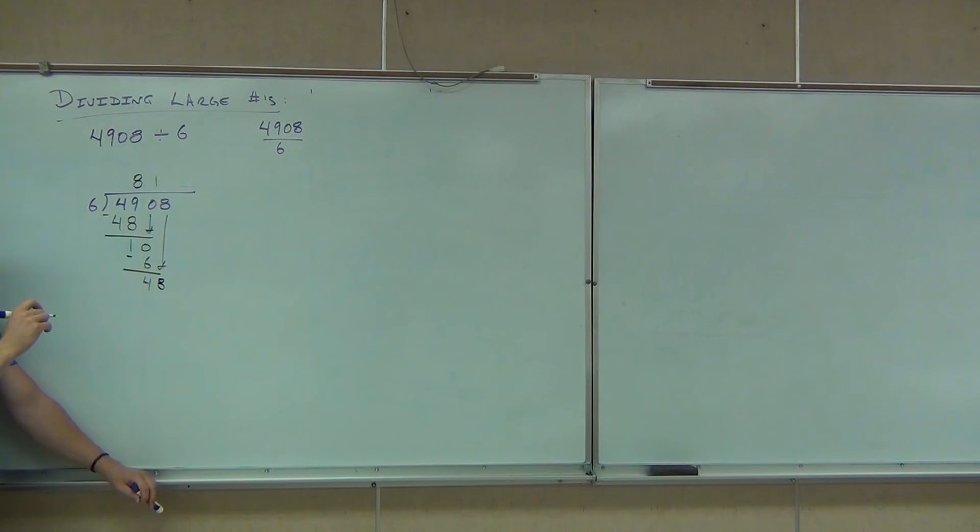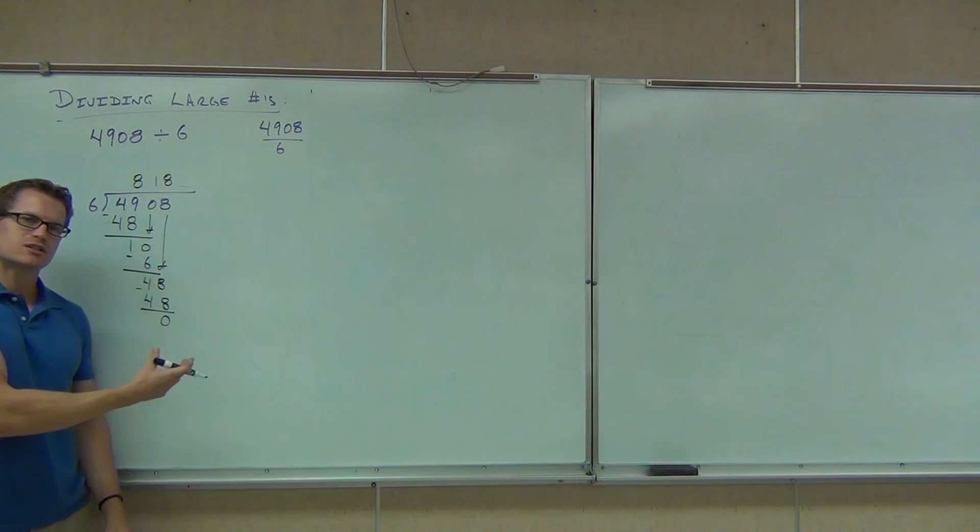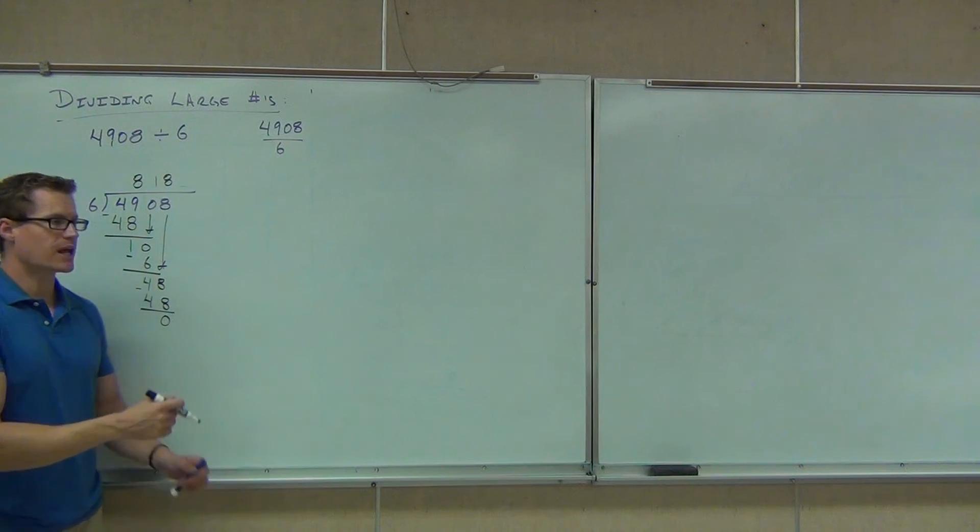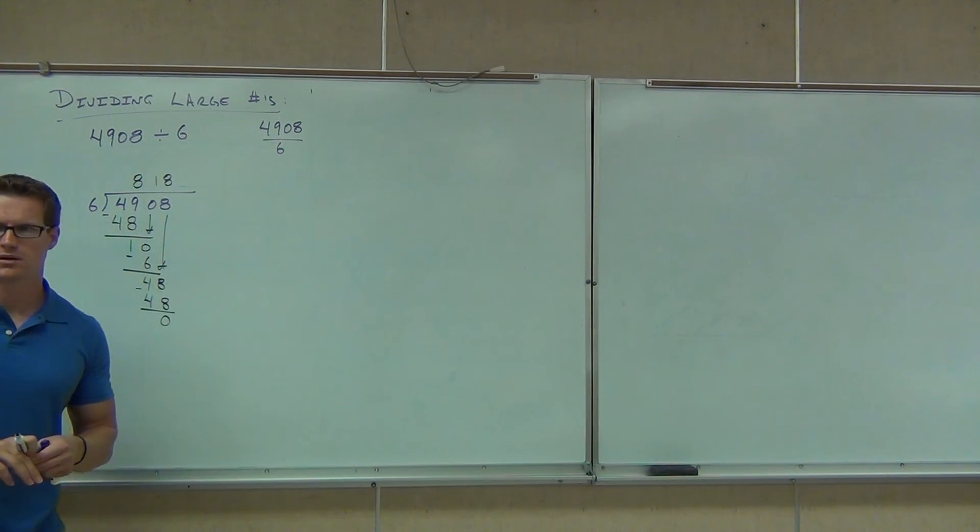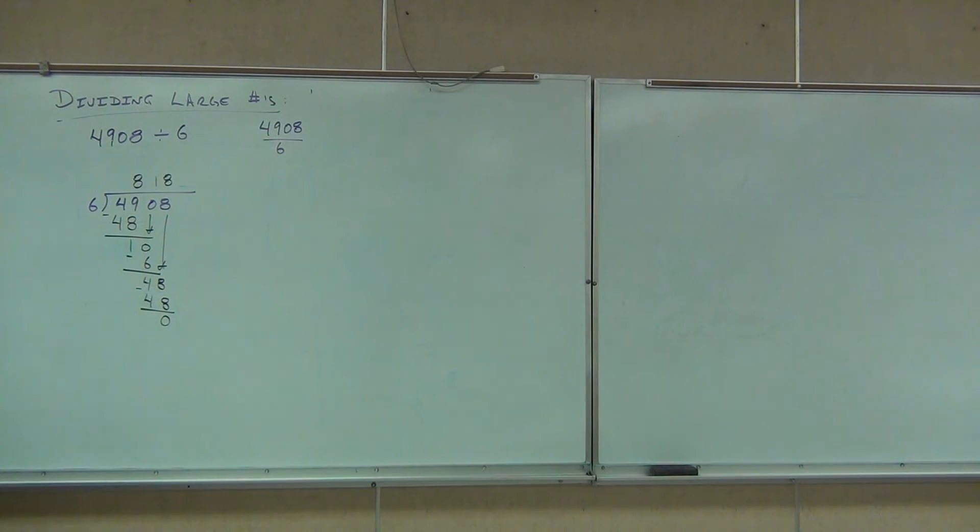And six goes into 48 how many times? Eight. We multiply. We get the 48. We subtract. And we get either a remainder, which we haven't had yet, or we get zero telling us it went in evenly. So this answer, this quotient, is going to be 818. Feel all right with the division so far? All right. Let's try a couple more, and we'll move on.